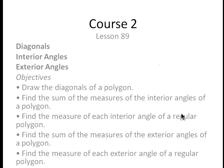Welcome to Lesson 89 of Saxon Math Course 2. In this lesson, we're going to take a look at diagonals, interior angles, and exterior angles. This is going to appear a little harder than it is, but it's not too bad once you get the hang of it. We're going to draw diagonals of a polygon, find the sum of the measures of the interior angles of that polygon, and we're going to do it for regular polygons. We're also going to find the measures of exterior angles for polygons and regular polygons.